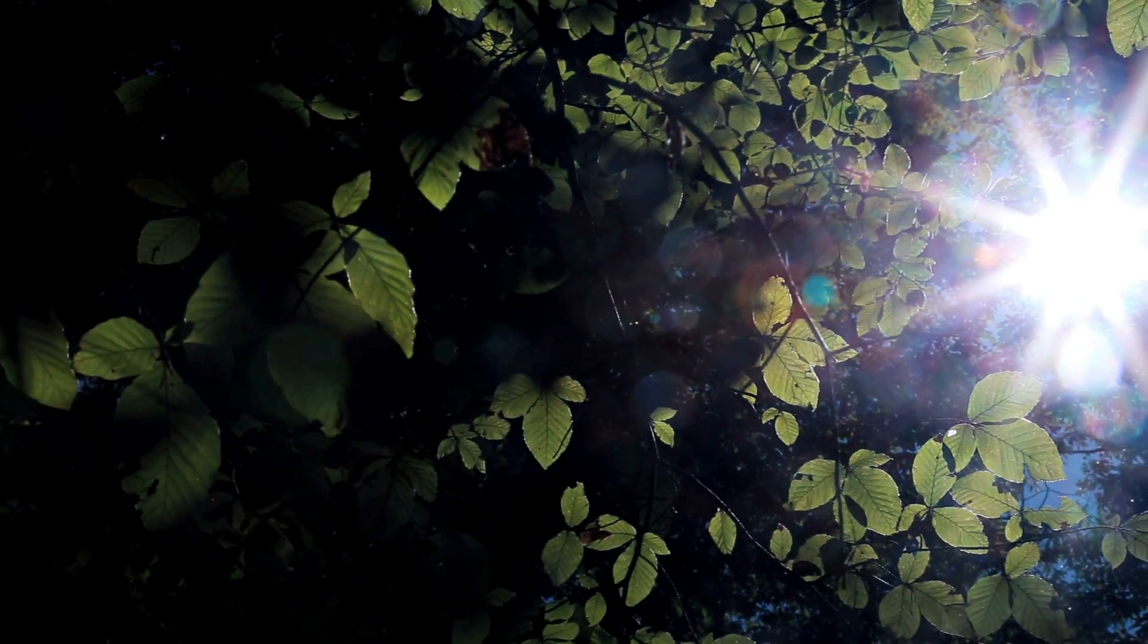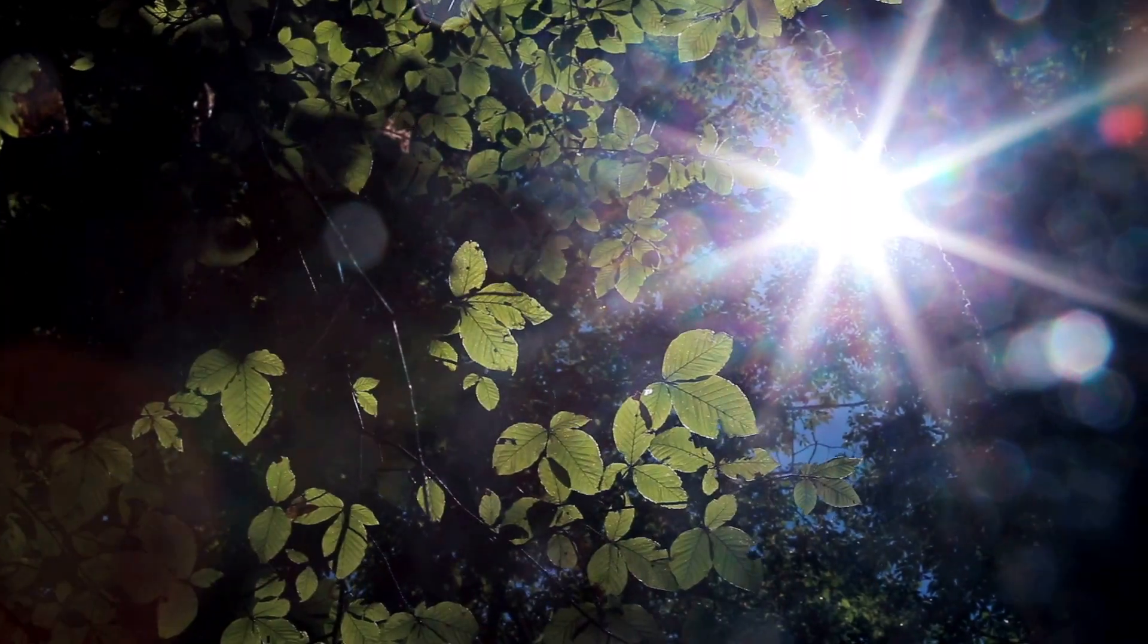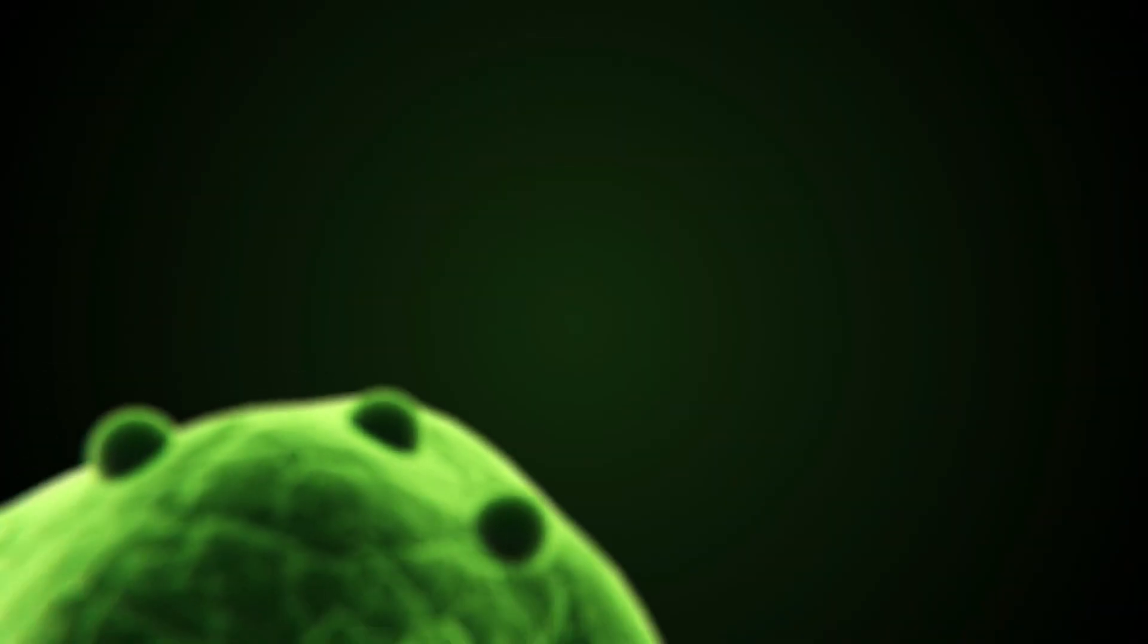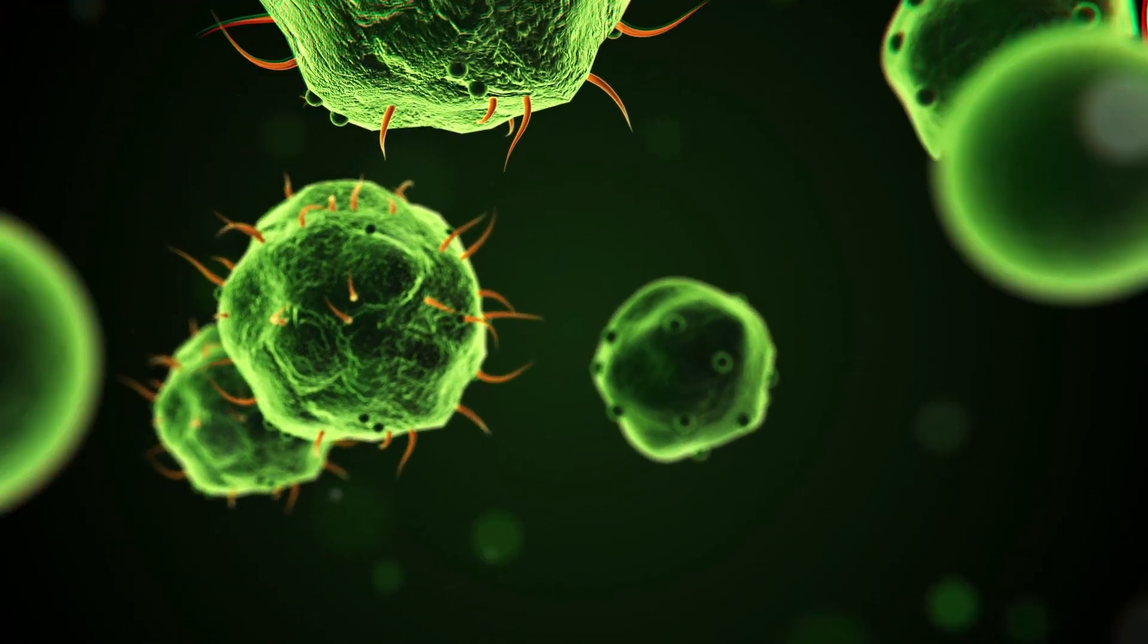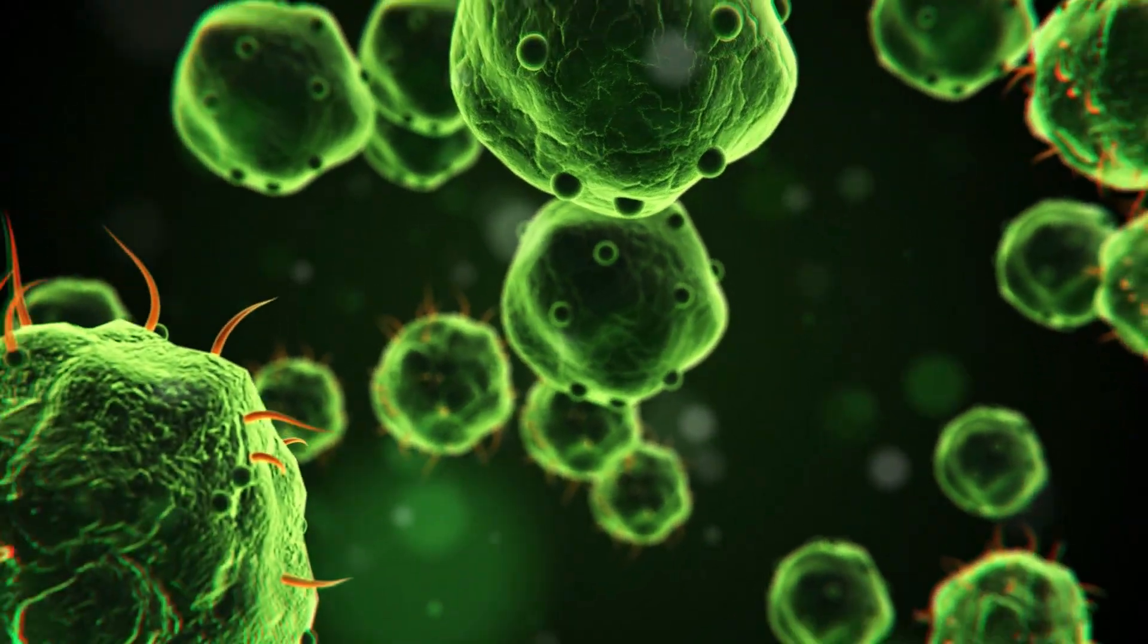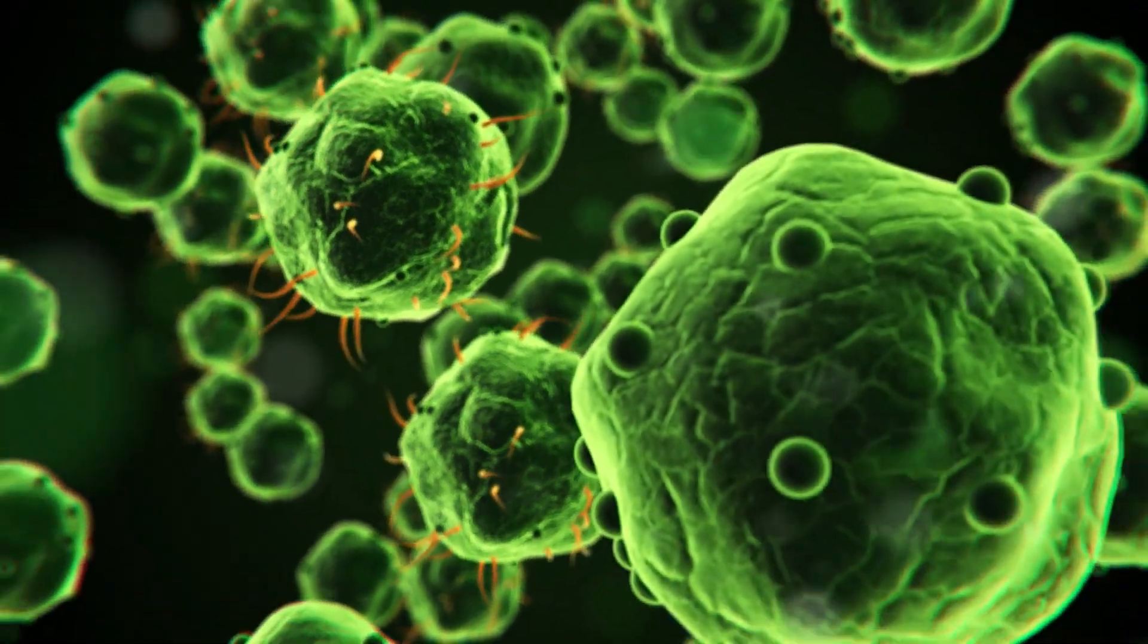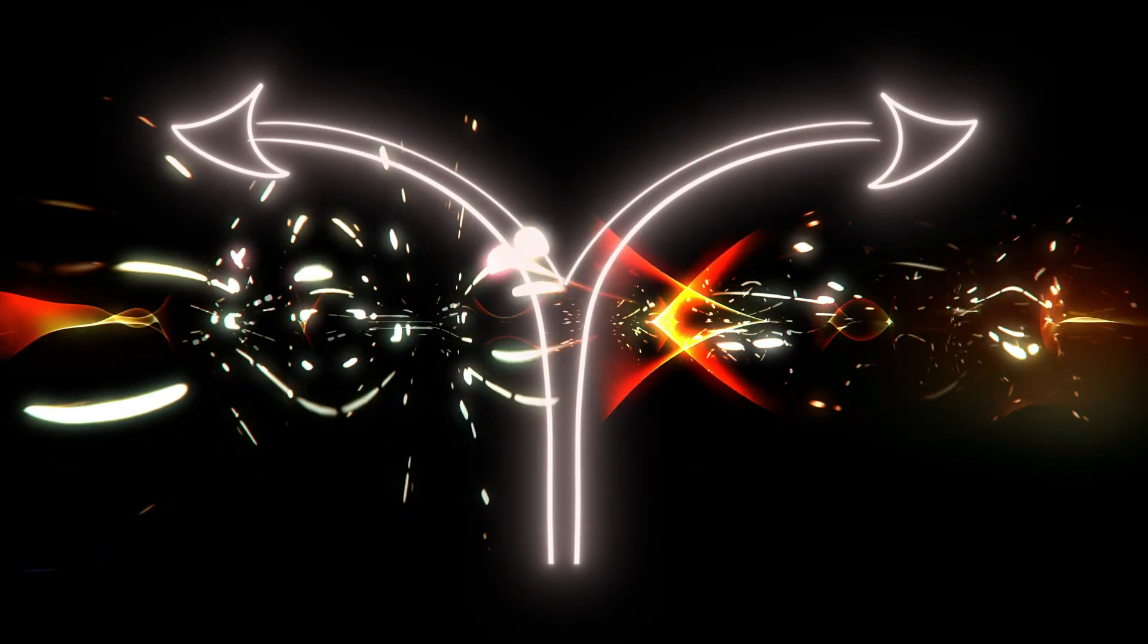Every school book says photosynthesis is simple. Sunlight hits a leaf and life turns light into energy. But look closer and the story gets stranger. In 2007, scientists fired ultra-fast lasers into photosynthetic bacteria just to see how energy moved between their pigment molecules. What they found changed everything. Instead of hopping randomly like marbles, the energy seemed to move as a quantum wave, exploring every possible path at once before choosing the most efficient one.